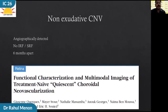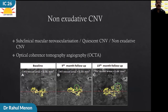In 2013, Querques and group described treatment-naive quiescent CNVM based on multimodal imaging including FFA, ICG, and OCTA. They called it quiescent CNV, defined as angiographically detected CNVM showing an absence of intraretinal or subretinal exudation on repeated OCT during follow-up done at least six months apart. Different authors have coined different terms such as subclinical macular neovascularization, quiescent CNV, and non-exudative CNVM. With the advent of OCTA imaging, it has been detected much more commonly.